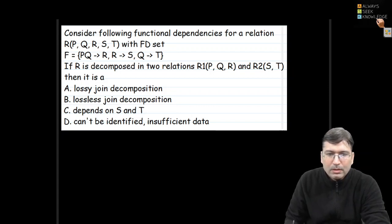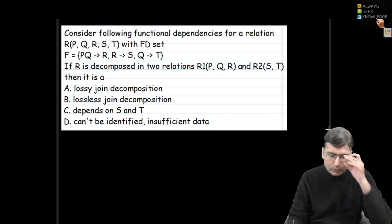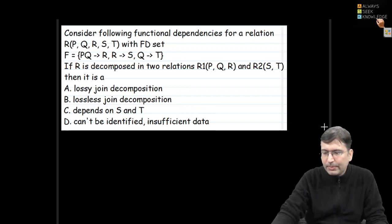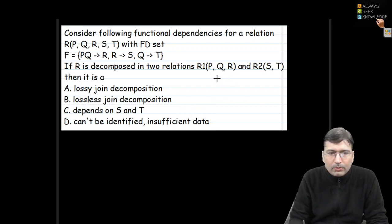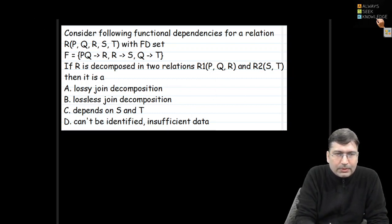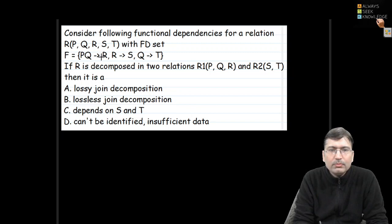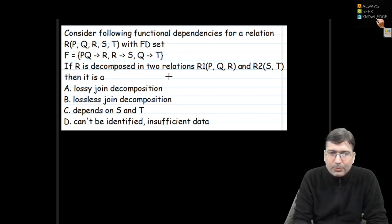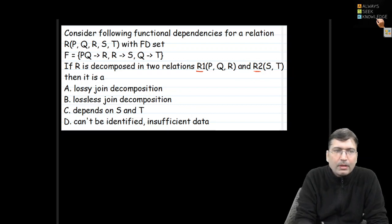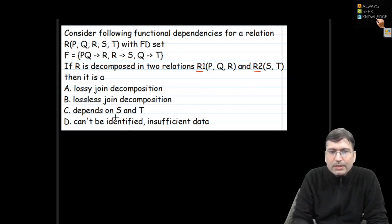Let's solve a few more problems on functional dependencies and normal forms. There is a relation R having attributes PQRST, with functional dependencies PQ→R, R→S, and Q→T. R is decomposed into two different relations R1 and R2, and we need to find out whether this decomposition is lossless or lossy.